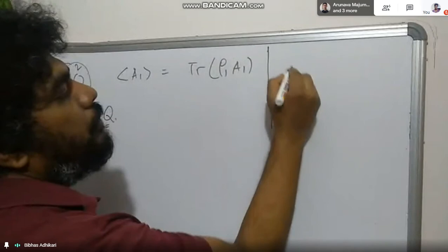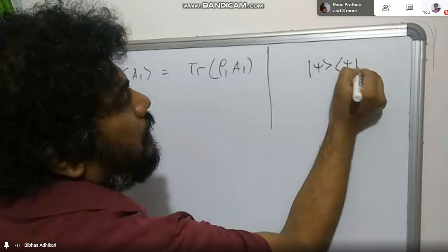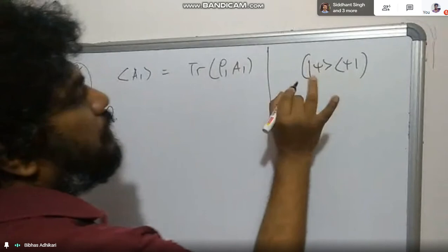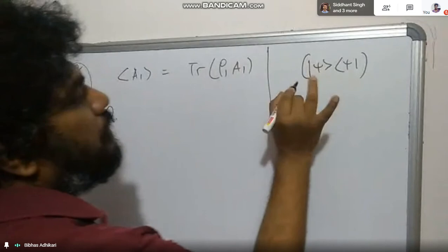We defined the partial trace for a density matrix corresponding to a pure state. You can define the partial trace for any density matrix — not a problem. We defined it such that you take the partial trace over the second system and you obtain what is called rho_1.